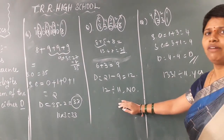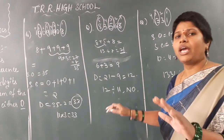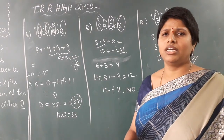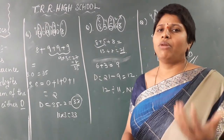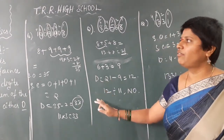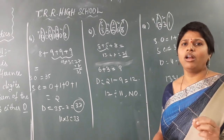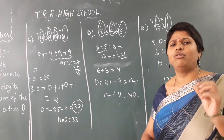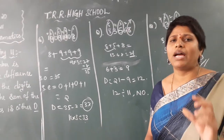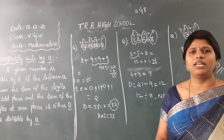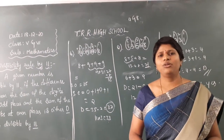I hope you all are clear. Take your own 5-digit or 6-digit number and check whether it is divisible by 11 or not. You have to do more and more practice on this — then only you will get it. Clear, children? Thank you.